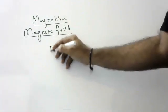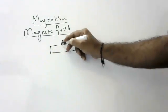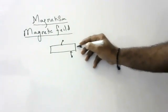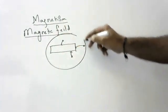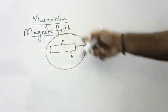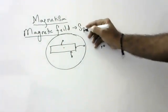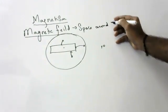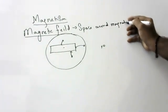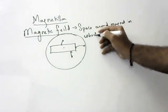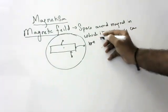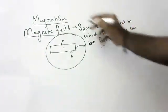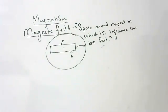What is magnetic field? Children, if you keep any magnet, some articles it will attract and some it won't. So what is magnetic field? It is the space around the magnet in which its influence can be felt. The space around the magnet in which its influence can be felt is called magnetic field.